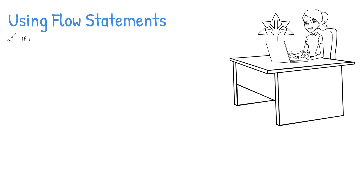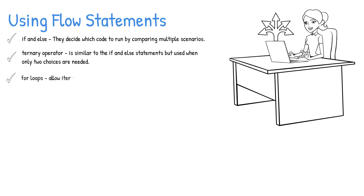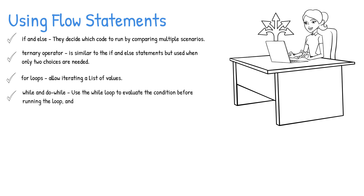If and else are the most common flow statements — they decide which code to run by comparing multiple scenarios. The ternary operator is similar to the if and else statements but used when only two choices are needed. For loops allow iterating a list of values.